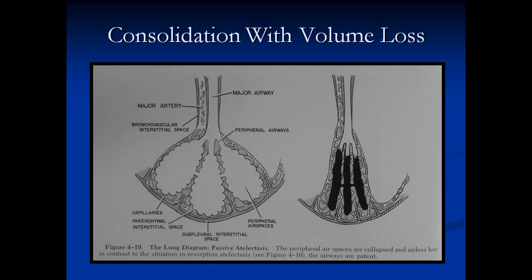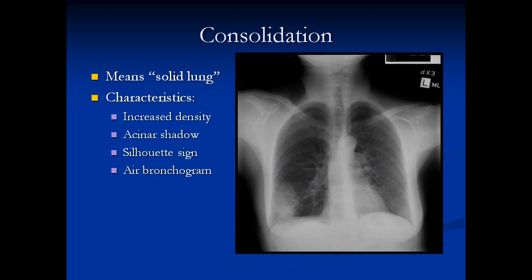Consolidation with volume loss looks like this. On the left side is the normal, and on the right side we can see that there's solid lung — soft tissue inside the air sacs — but there's also volume loss in that the lung is collapsed. So consolidation means solid lung.